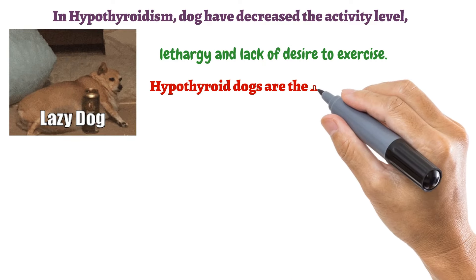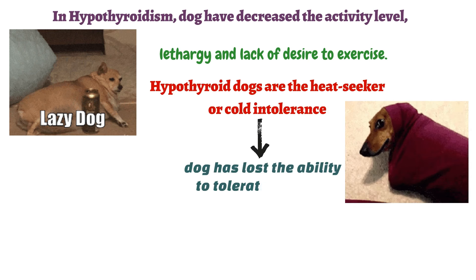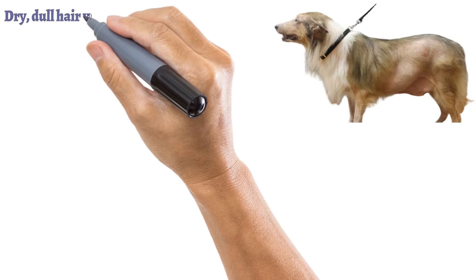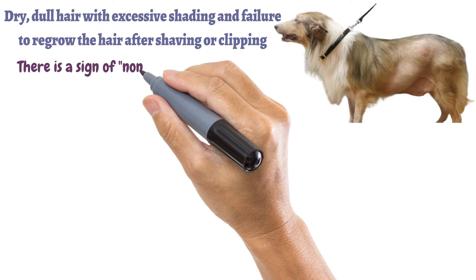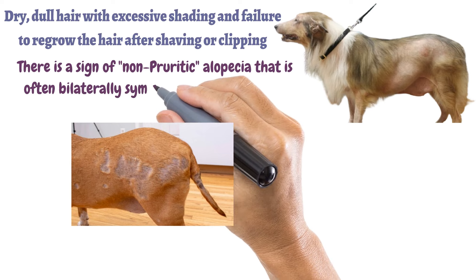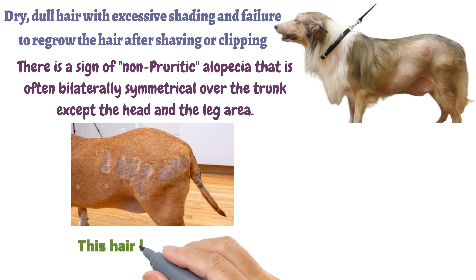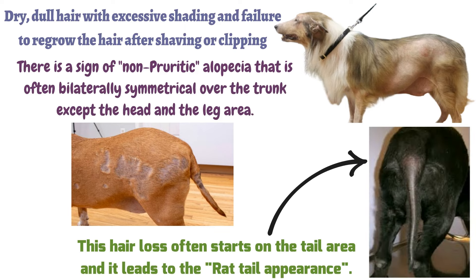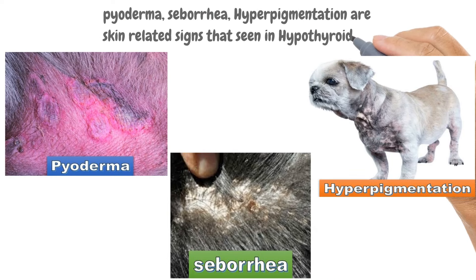Hypothyroid dogs are heat seekers with cold intolerance — they lose the ability to tolerate cold and generally try to find warm places. Other signs include dry, dull hair with excessive shedding and failure to regrow hair after shaving or clipping. There is also non-pruritic alopecia that is often bilaterally symmetrical over the trunk, sparing the head and legs, frequently starting on the tail area and producing a 'rat tail' appearance. Skin signs include pyoderma, seborrhea, and hyperpigmentation.